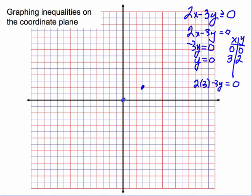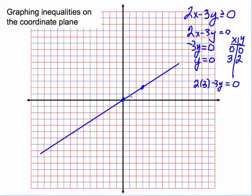We draw the boundary line through the origin and the point (3, 2). Now we need a point to test, but we can't use (0, 0) because it's right on the boundary, so we'll pick a different point. Let's use the point (0, 2). If x is 0 and y is 2, we get negative 3 times 2, which is negative 6, and we need it to be greater than or equal to 0. That's false, so this point is not a solution to the inequality. We shade on the other side of the line.